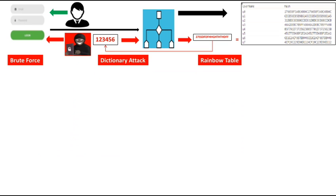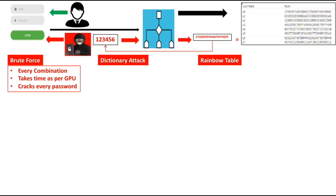There are three methods a hacker may use to perform this operation: brute force, dictionary attack, or rainbow table attack. In brute force, the hacker tries each and every possible combination of characters until he finds the right hash value or the right match in the password file.